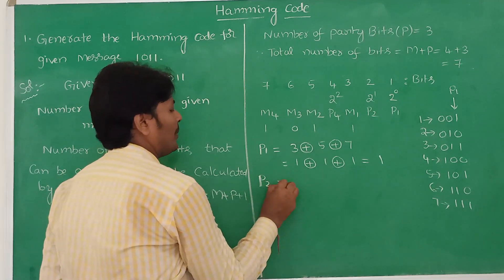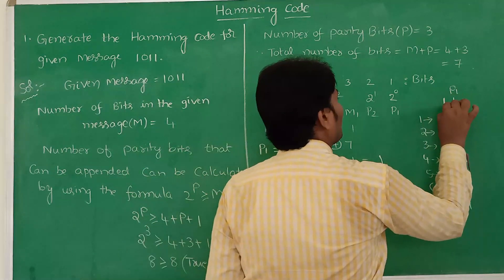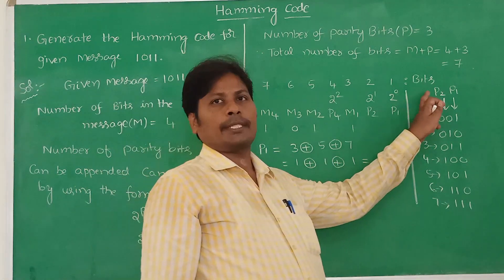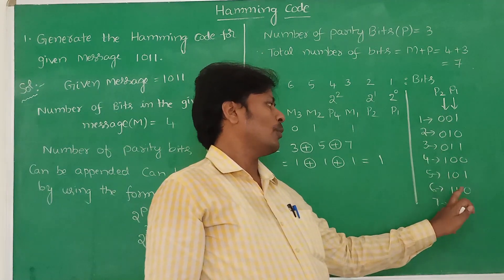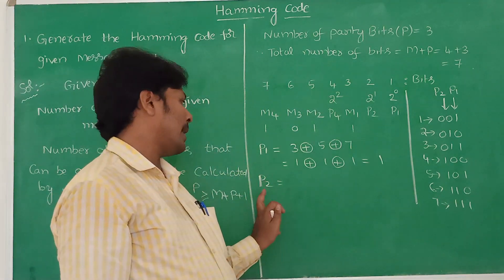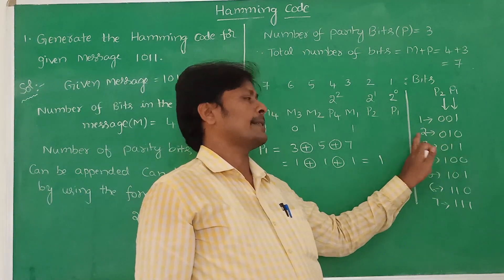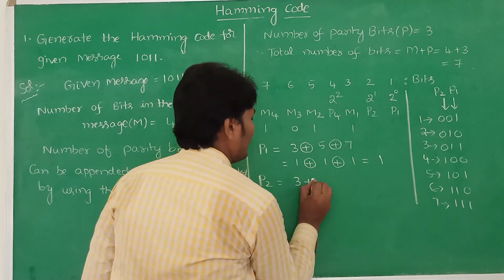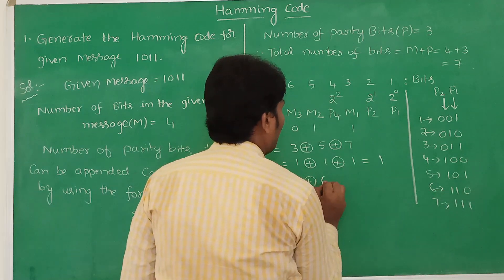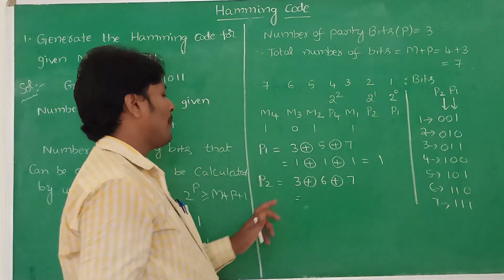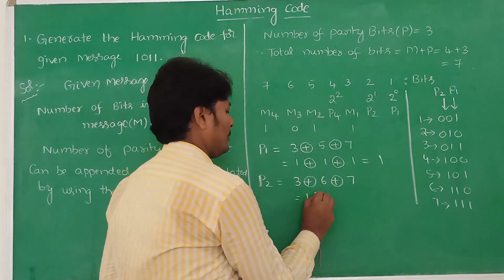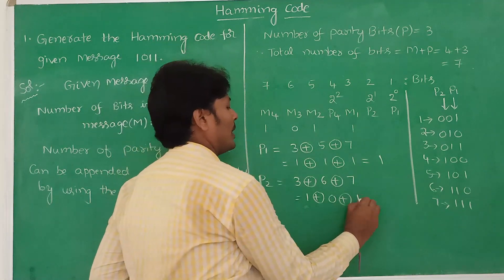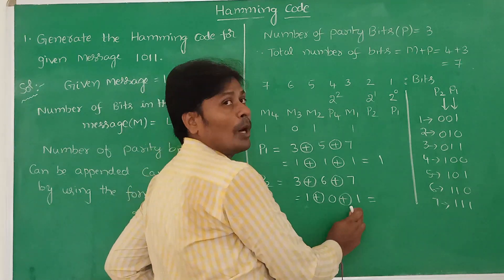Now we calculate parity bit P2 by considering the second column. In that second column, ones are present at positions 2, 3, 6, and 7. Since we are calculating P2, the bit at position 2 is not considered. The remaining positions are 3, 6, and 7. The message bit value at position 3 is 1, at position 6 is 1, and at position 7 is 1. So P2 = 1 XOR 1 XOR 1: 1 XOR 1 = 0, then 0 XOR 1 = 1. Wait — 1 XOR 1 = 0. Therefore P2 = 0.